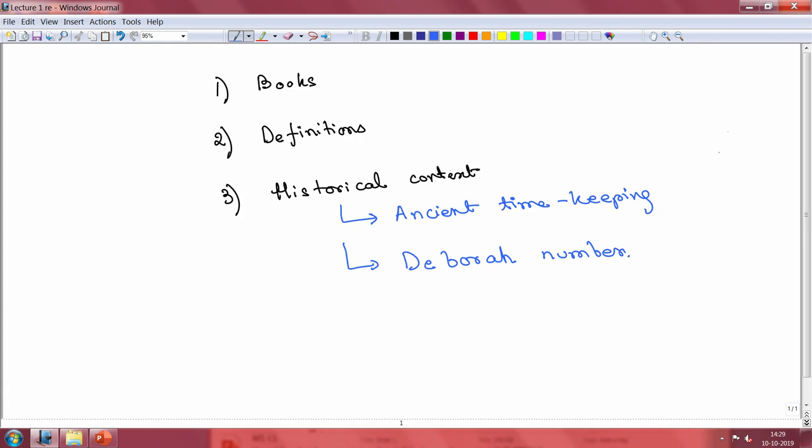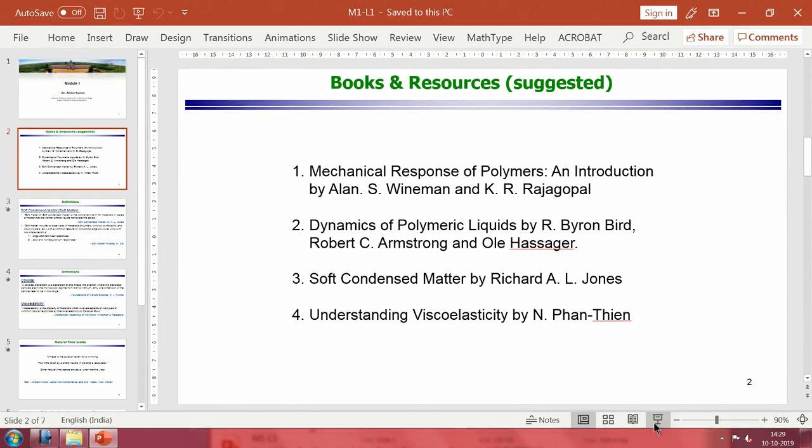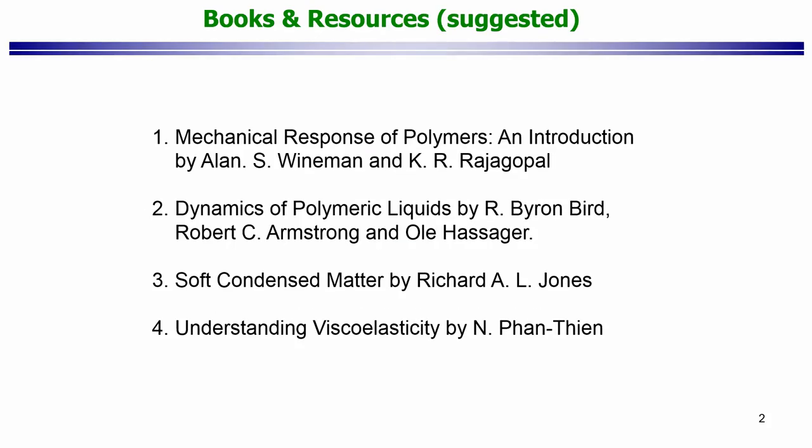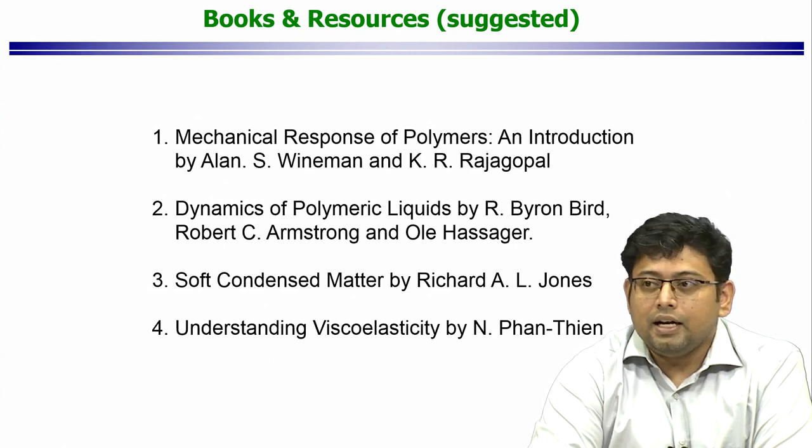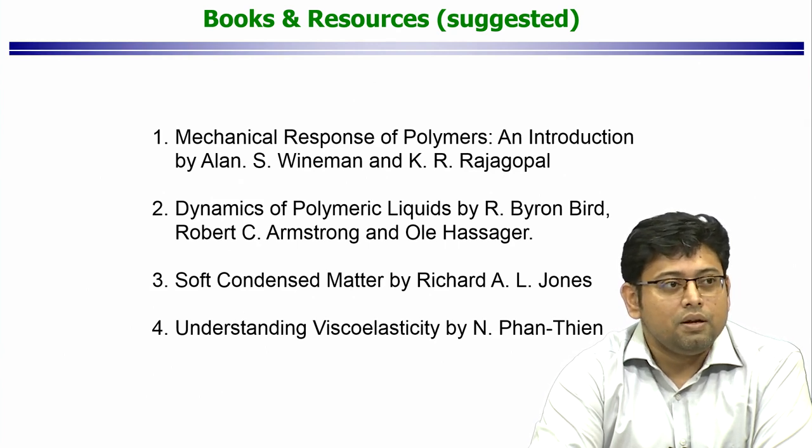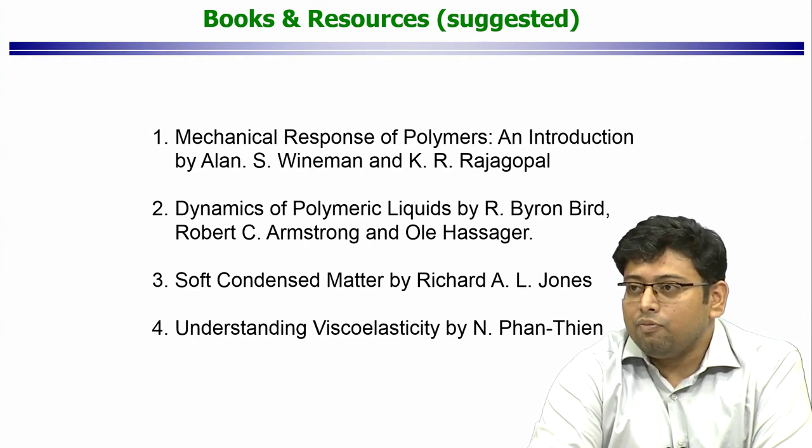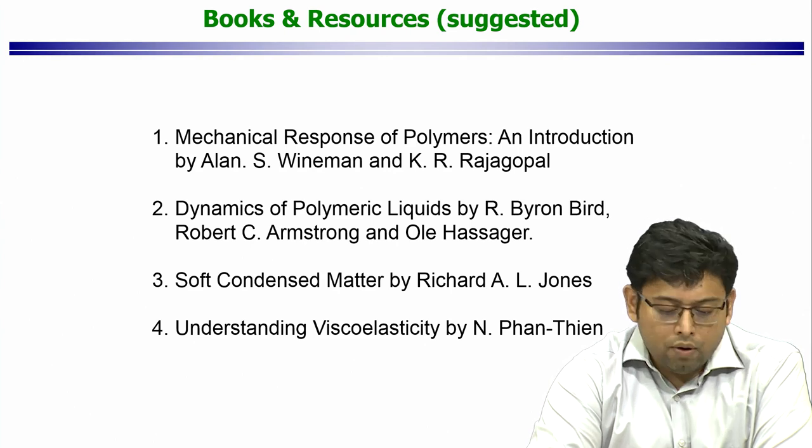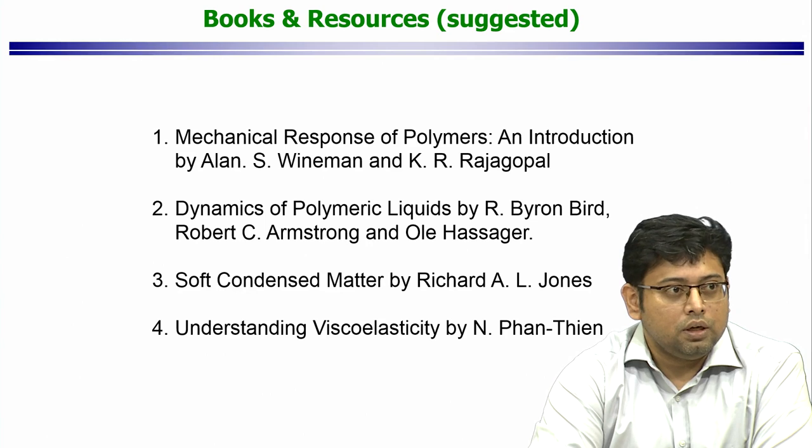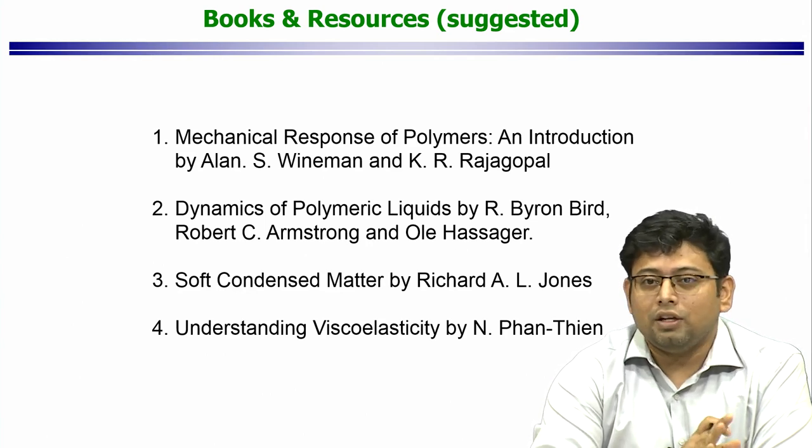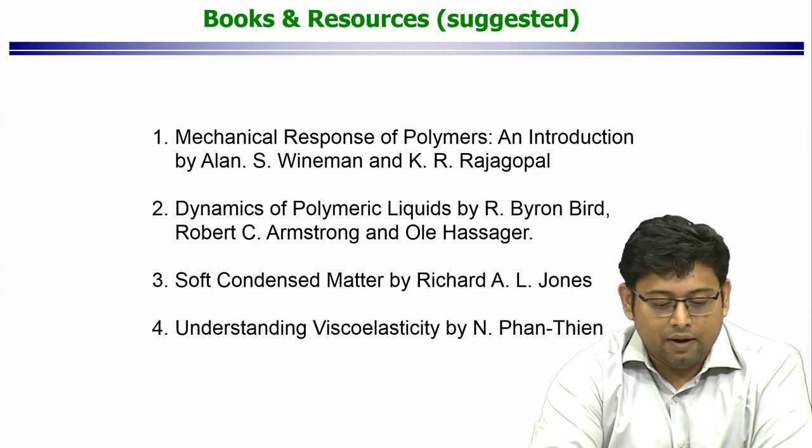Let us get started with the first part, which is books. Now, it so happens that there are many different books that are really good textbooks. The issue with soft matter is that this is truly an interdisciplinary course where a lot of different disciplines, for example chemistry, physics, mechanical engineering, aerospace engineering, chemical engineering, all these come together. As a result, there are many books written by authors keeping in mind these different disciplines. Hence there are a variety of books with a variety of different approaches. I am not trying to detail all the different possible books that are out there, but I have only made a small list. My apologies to all the different books that I have left out.